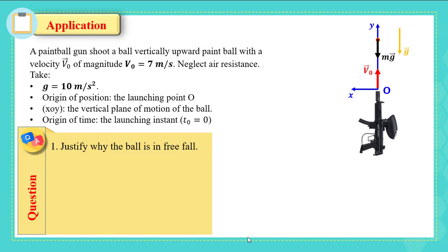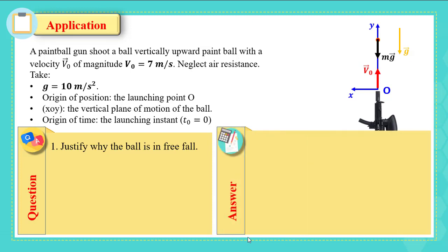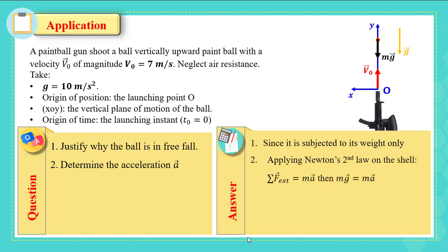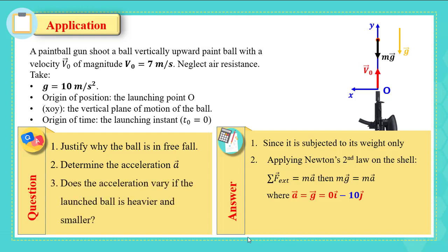Since the only force acting on this paintball is its weight, it is in free fall. For Question 2, determine acceleration vector a: applying Newton's second law, the sum of forces equals ma, so mg vector equals ma vector, giving a vector = g vector = −10ĵ m/s². Question 3: does the acceleration vary if the launched ball is heavier and smaller? No — in free fall, acceleration is independent of mass and volume.